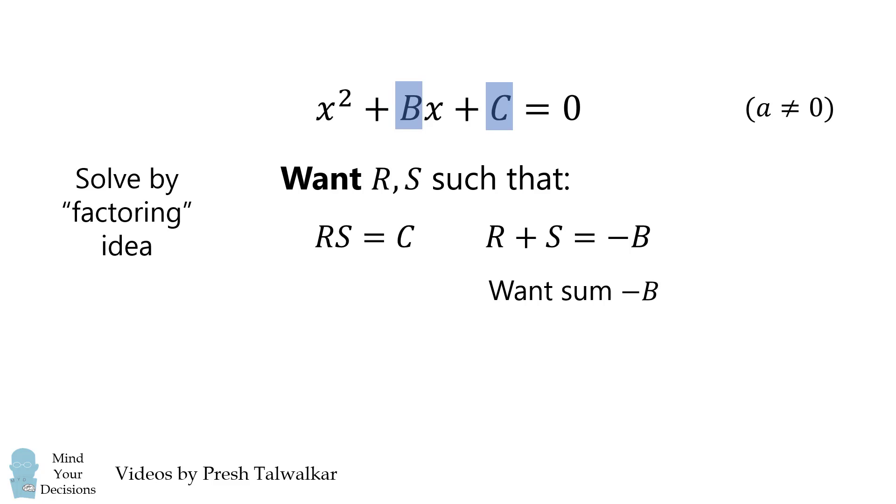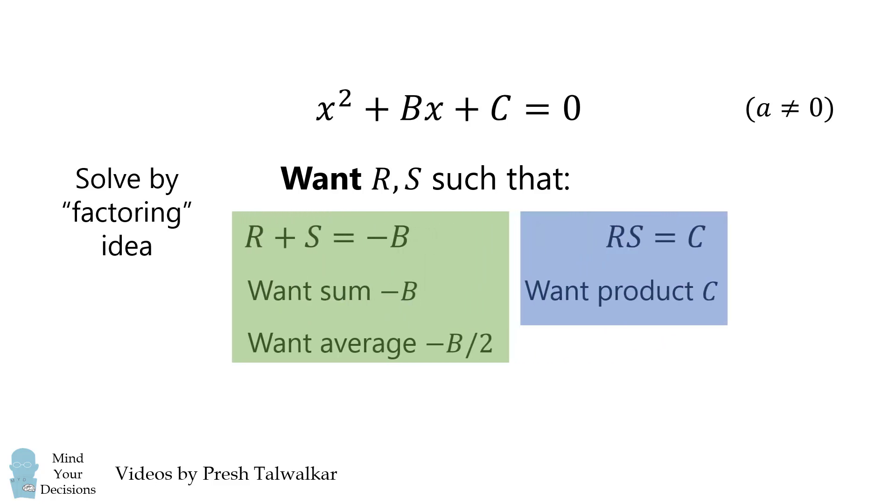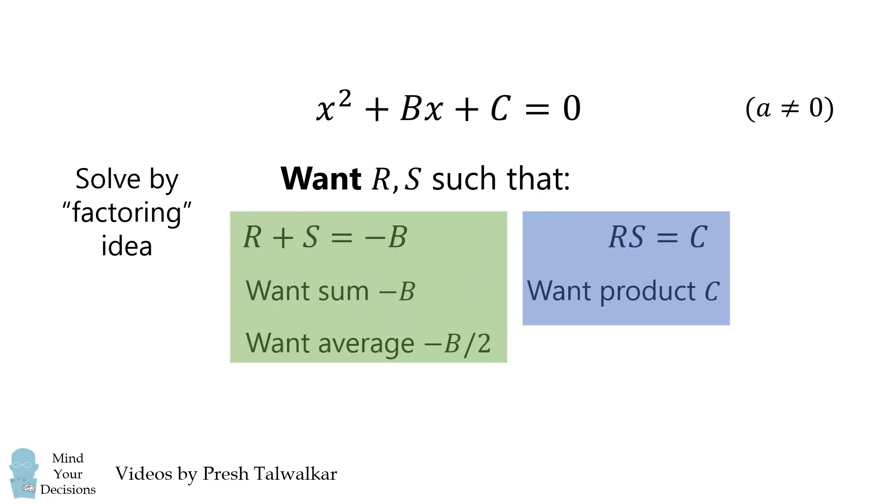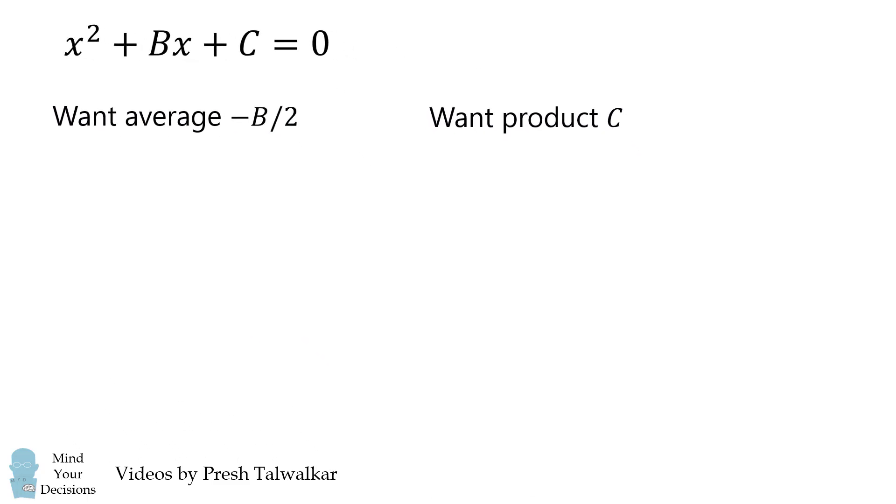Well, if we have a sum of negative B, that's the same thing as saying we want an average of negative B over 2 for two numbers. We would then want to see if those numbers have a product of C. Now in class, we typically consider C and look for factors, and then see which factors have the sum of negative B. A key insight in this method is to flip this process around. Let's consider the sum, and then try and work out the product. So we want two numbers that have an average of negative B over 2. These can take the form negative B over 2 plus some increment Z, and negative B over 2 minus some increment Z.